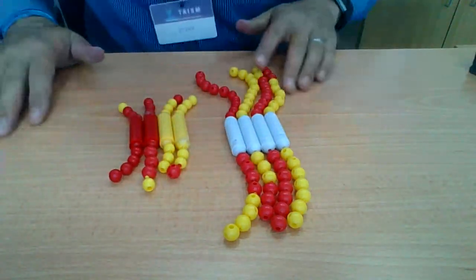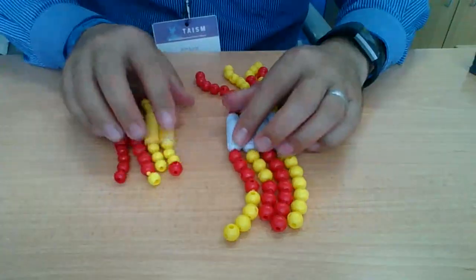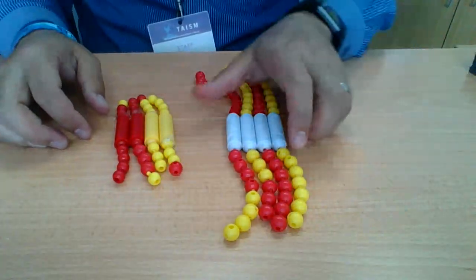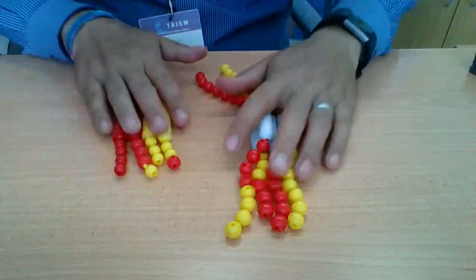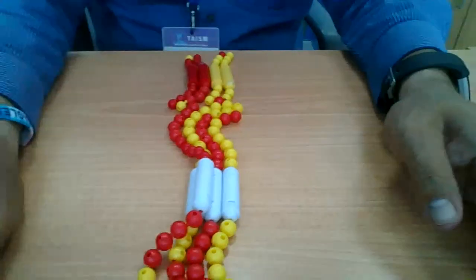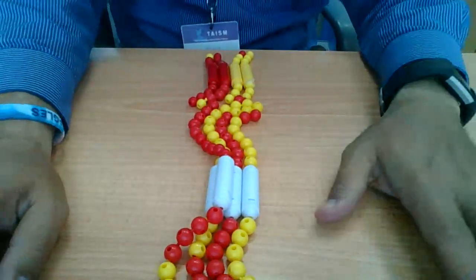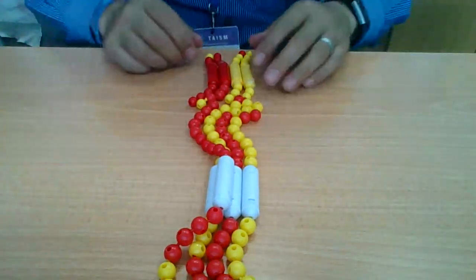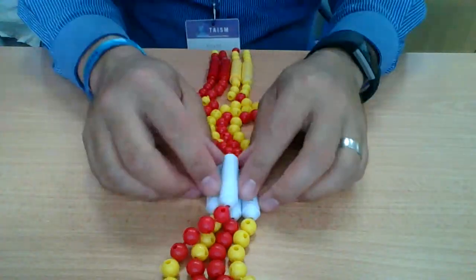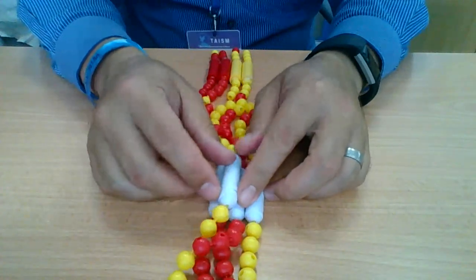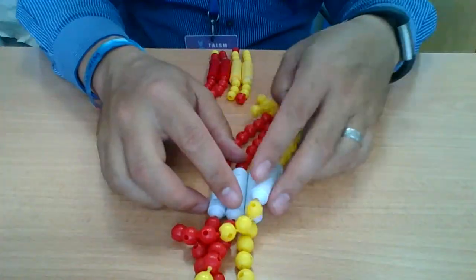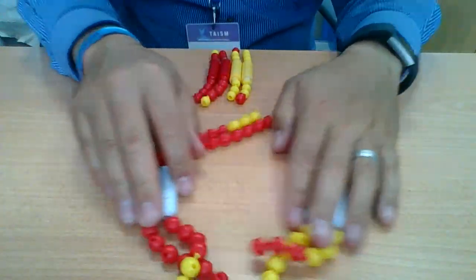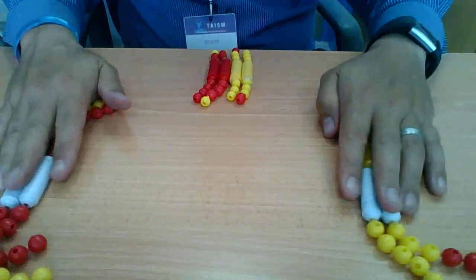We have now crossed over. We've exchanged some alleles. The tetrads stay together, and we line up in the middle in the equatorial plate for metaphase. And what's going to happen now, this is another difference. The homologous chromosomes are going to be pulled apart.